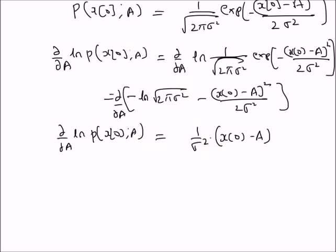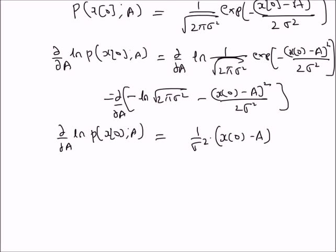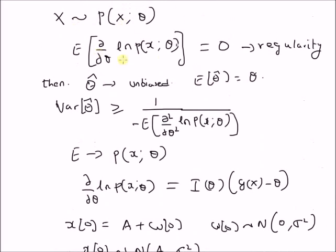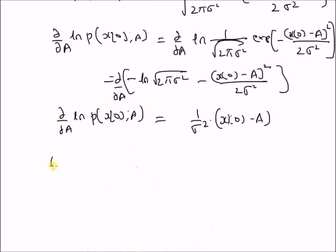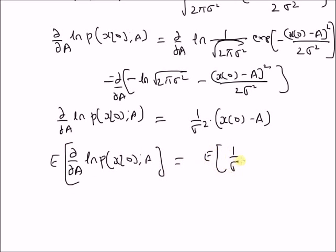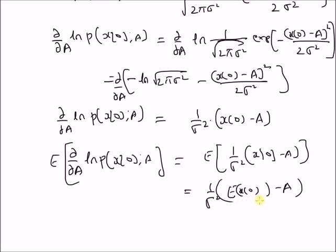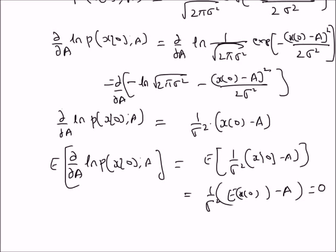Let us verify if this derivative satisfies the regularity condition required for the Cramér-Rao bound theorem. We want to find the expectation of the first derivative of the log-likelihood function. Clearly, the expectation of (1/sigma-squared) * (x(0) - a) equals 0. Therefore, the regularity condition is satisfied.